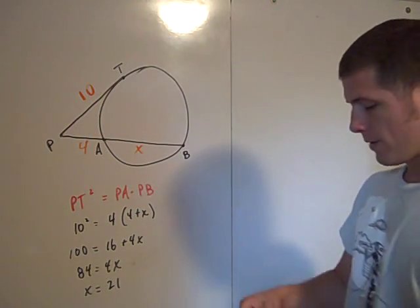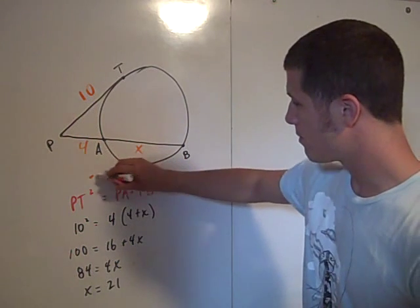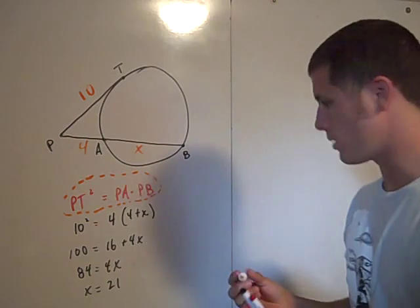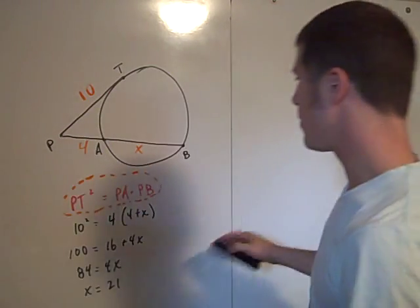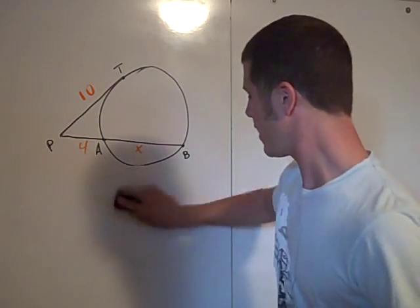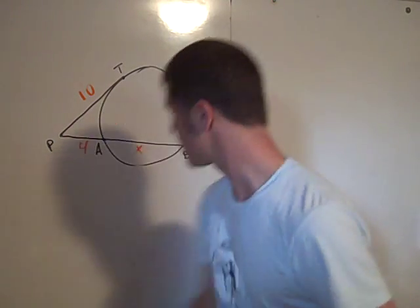So we want to prove this statement right here, that PT squared is in fact equal to PA times PB. So I'll use the same diagram here. And again, it's going to involve similar triangles.